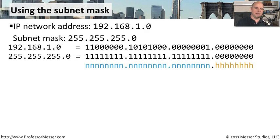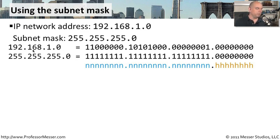Let me give you an idea of how you could take an IP address — in this particular case 192.168.1.0 — and have a subnet mask of 255.255.255.0, and calculate how all of this would be subnetted out. What we'll first do is take those two IP addresses, the IP address of the device and the subnet mask, and write out their binary representation on the screen. We've separated each octet and written the binary equivalent of that.